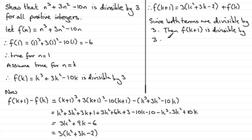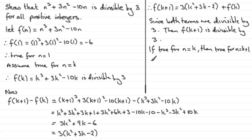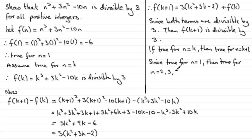So we've seen that if true for n equals k, then it is true for n equals k plus 1. We already proved it was true for n equals 1, so it must be true for n equals 2. If true for n equals 2, it's true for 3, then 4, 5, and so on. Therefore it must be true for all positive integers — n is a member of the positive integer set. And there you have your proof.